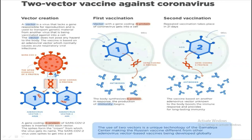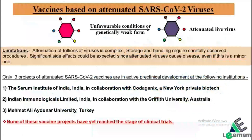Now we will see the types of vaccines based on SARS-CoV-2 virus. There are many types: live attenuated vaccines, inactivated vaccines, DNA vaccines, mRNA-based vaccines, subunit vaccines, and more. For a live attenuated vaccine, the normal virus is given unfavorable conditions or is modified so that it generates a weak form, and then used for vaccination purposes.